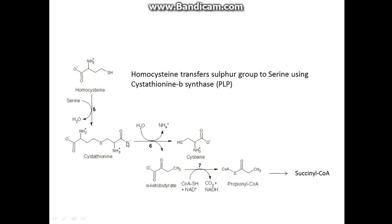From homocysteine, serine attaches to it and loses a water molecule. As you can see, the sulfur has lost a hydrogen and bonded to the serine carbon. This intermediate then gains water, loses an ammonium ion, and produces cysteine and alpha-ketobutyrate — these two products come from reaction six. Reaction seven involves coenzyme A and NAD to give CO2, proceeding to propanoyl-CoA, which is then metabolized by a few further steps to succinyl-CoA.